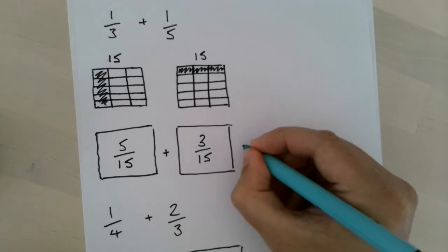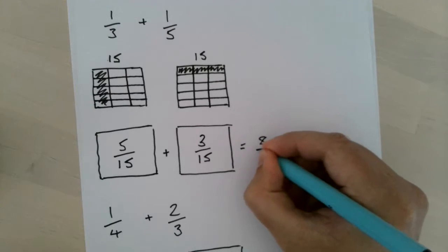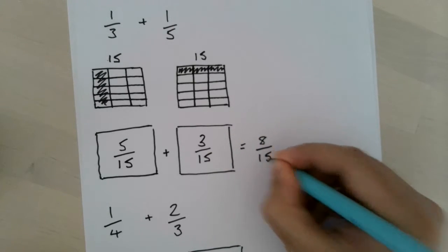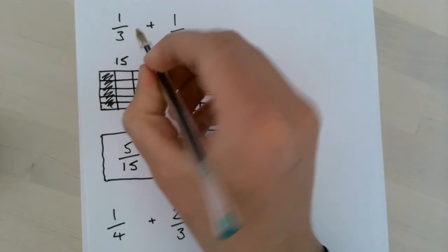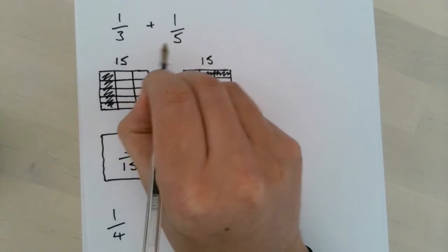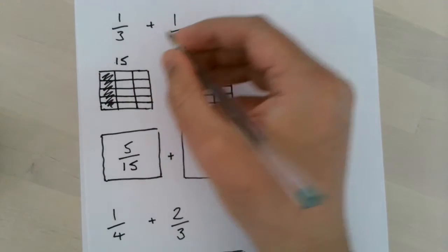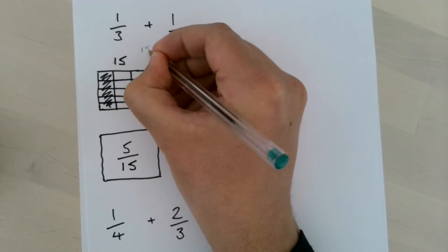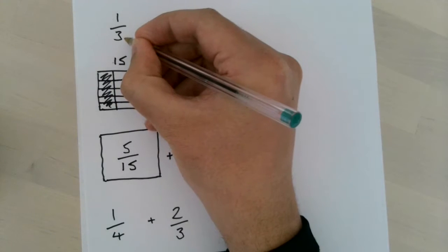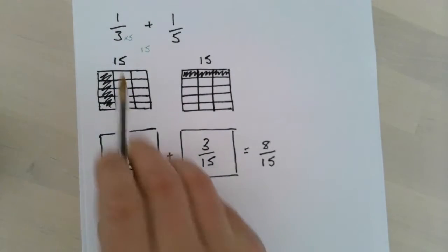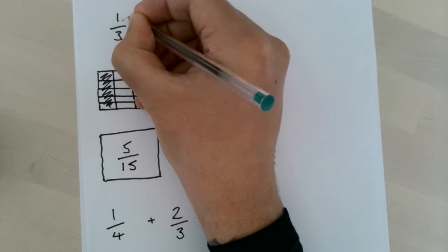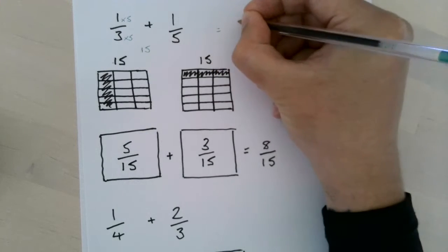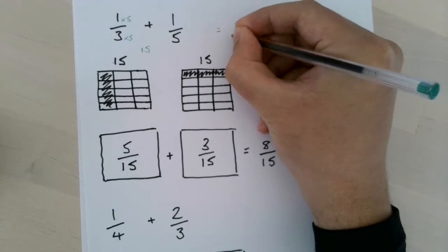Which leaves my answer as 8 over 15. So if we were to look at that without picture form, we would look at times-ing the denominators together: 3 times 5 is 15, so we're looking to make both denominators now 15. So I would times 3 by 5. Now what I do to the denominator I have to do to the numerator, times that by 5, which leaves me now with a new fraction of 5 over 15.